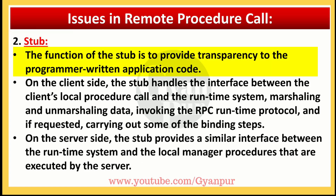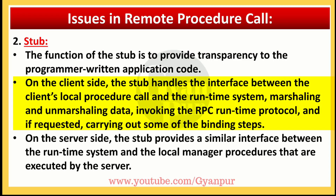The second issue is the stub. The function of the stub is to provide transparency to the programmer-written application code. On the client side, the stub handles the interface between the client's local procedure call and the runtime system, including marshaling and unmarshaling data, invoking the RPC runtime protocol, and if requested, carrying out some of the binding steps.